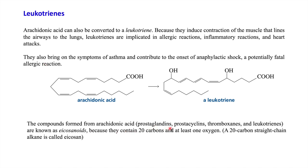Prostaglandins, prostacycline, thromboxane, and leukotrienes all have their biosynthesis starting from arachidonic acid. These compounds are called eicosanoids because they contain 20 carbons in their structure and at least one oxygen. If oxygen is absent, then they are called eicosins.